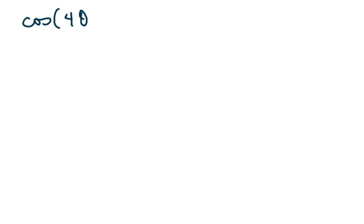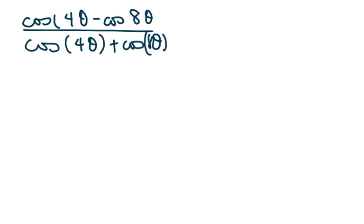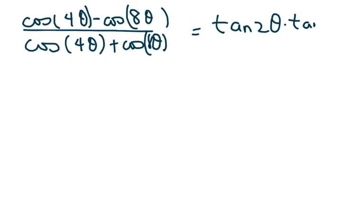We're going to do one more. We have (cosine of 4 theta minus cosine of 8 theta) over (cosine of 4 theta plus cosine of 8 theta), and this should equal tan of 2 theta times tan of 6 theta.